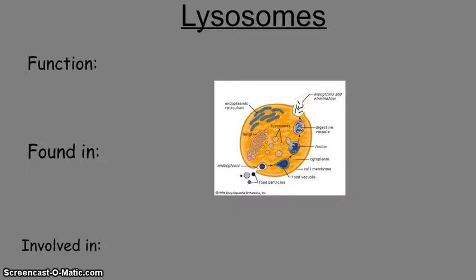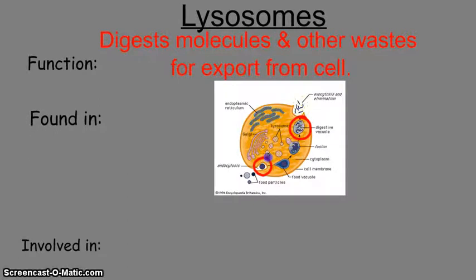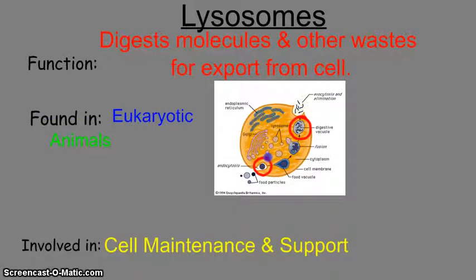Lysosomes are formed as the membrane pinches in around material to digest it. Their job is to digest molecules and other wastes for export from the cell. They are found in eukaryotic cells only, and specifically in animals only. They are involved in cell maintenance and support and maintaining homeostasis.